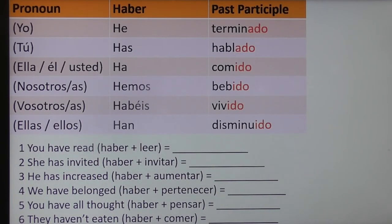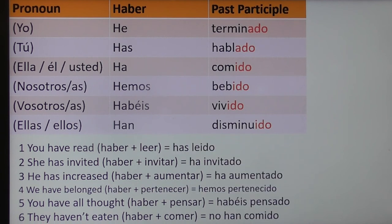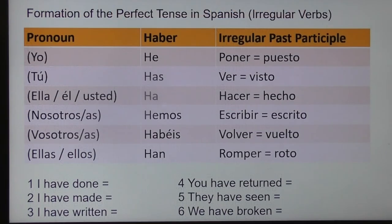Now have a go at numbers one to six using a variety of pronouns: you, she, he, we, all of you, and they. Check your answers against the pronoun, the conjugation of haber — whether it's he, has, ha, hemos, habéis, han — and then your use of past participles. That's how you form the perfect tense in Spanish using regular verbs.